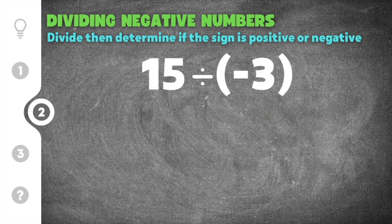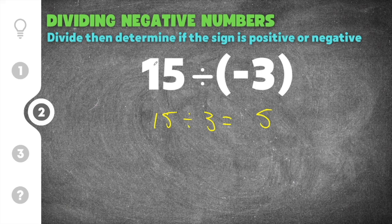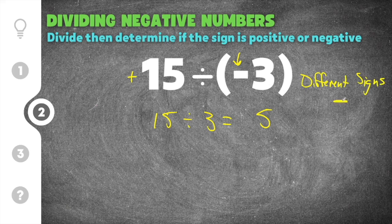Moving on to the second practice problem. This problem gives us 15 divided by negative three. We divide the numbers ignoring the signs: 15 divided by three is five. To figure out if this five is positive or negative, we look at the signs of the two numbers. This 15 is positive and this three is negative, meaning they have different signs. Because the signs are different, the answer is going to be negative five.